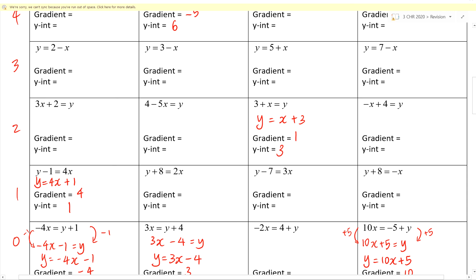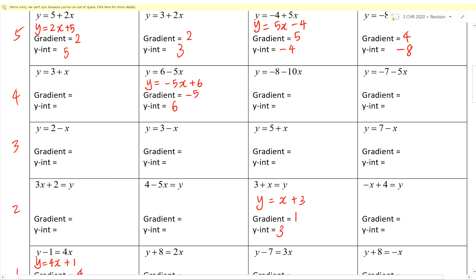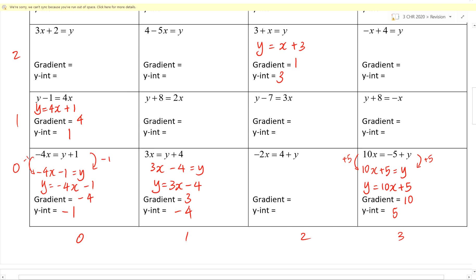Let's go through the rest of the questions. Come level 1 level 0 — value is 1 and 3. Good. Next: block 1 level 1 — answer is 2 and negative 8. Good, because the working is y equals 2x minus 8.